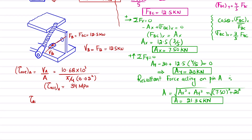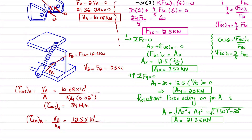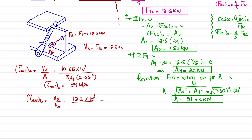The average shear stress at point B equals VB divided by the shear area at B. With VB equals 12.5 kN and pin B diameter equal to 30 mm: tau_B equals 12.5 × 10³ divided by (π/4 × (0.03)²), which gives the average shear stress at point B equal to 17.7 MPa.